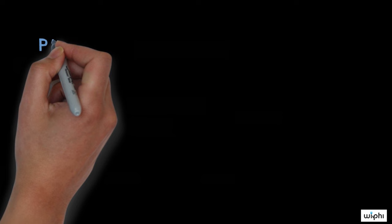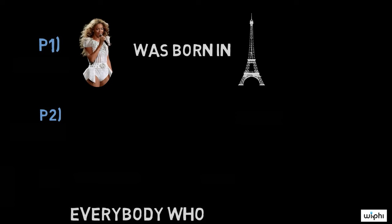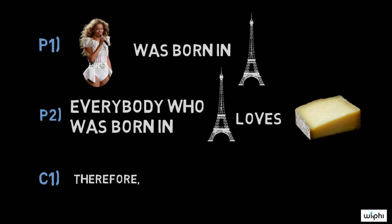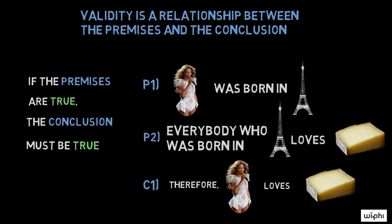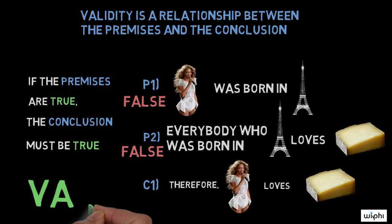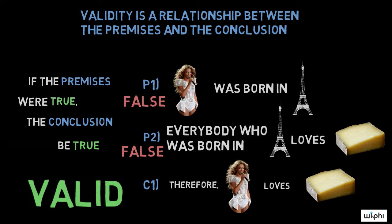Consider, for example, this argument. Premise 1: Beyoncé was born in Paris. Premise 2: Everybody who was born in Paris loves cheese. Conclusion: Therefore, Beyoncé loves cheese. Those premises are false — Beyoncé was born in Houston, and I'm willing to bet that at least some people born in Paris hate cheese. Still, it's a valid argument. If the premises were true, then the conclusion would have to be true. But because the premises are false, this argument doesn't give you a good reason to believe its conclusion, even though it's valid.